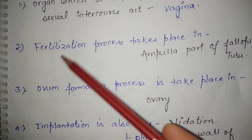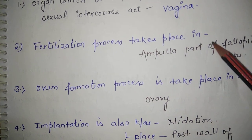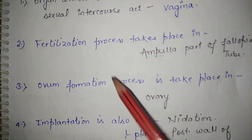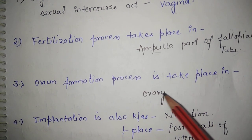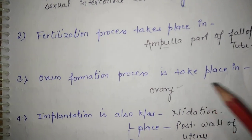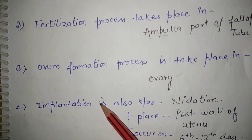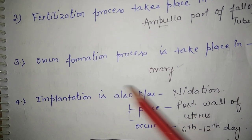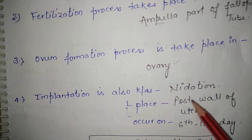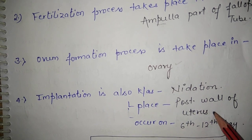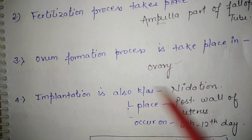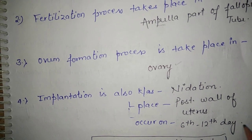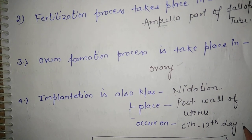The process of fertilization takes place in the fallopian tube, specifically in the ampulla part. Ovum formation takes place in the ovary. Implantation is also known as nidation. The place where implantation takes place is the posterior wall of the uterus, and implantation occurs on the 6th to 12th day after fertilization.